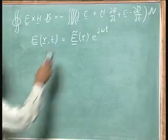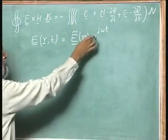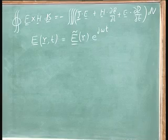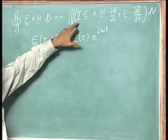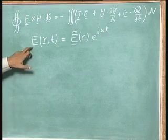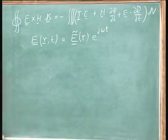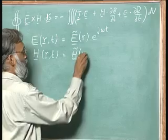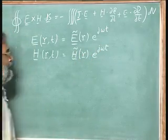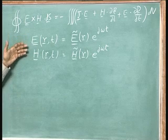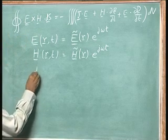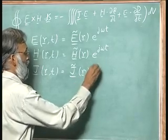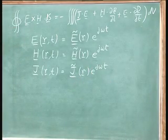In electrical engineering — whether power systems or communications — we always deal with phasors of electrical and magnetic fields. So we want to translate this Poynting theorem to a phasor equation. I would like to represent the electric field, a function of position and time, replaced with a phasor times e^{jωt}. To avoid confusion between j (current density) and sqrt(-1), I am calling current density capital J.